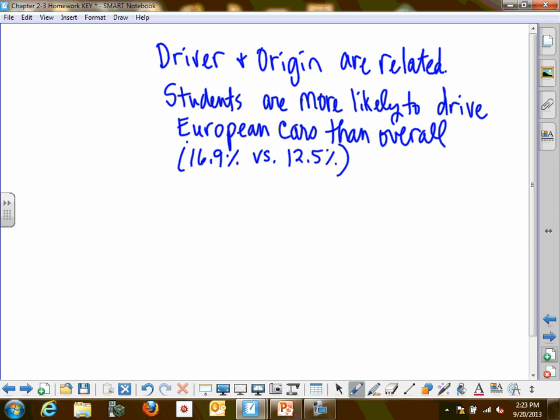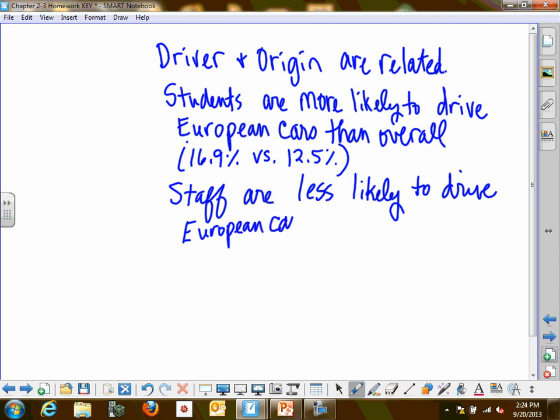Support with specific numbers: 16.9% versus the 12.5% that was expected. Let's make a statement about staff. Staff are, what do you want to say about that? Pick one, try to pick the one that's the most varied. I think they're both about 5% off actually. Staff are less likely to drive European cars than overall. And that number I think was 7.3% versus 12.5%. So I will conclude with the thing that we want to know about, which is independence or not independence.